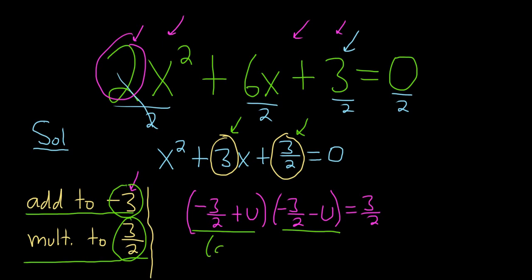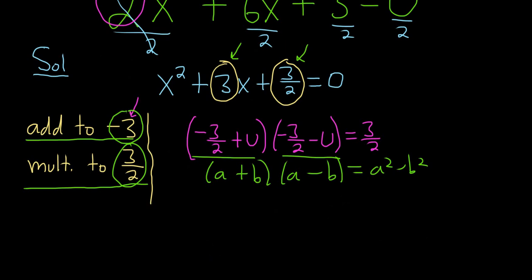Alright, now you can use the difference of squares formula. This is a plus b, a minus b, and that's equal to 3 halves. So it's a squared minus b squared. So let's do this. Scroll down here.